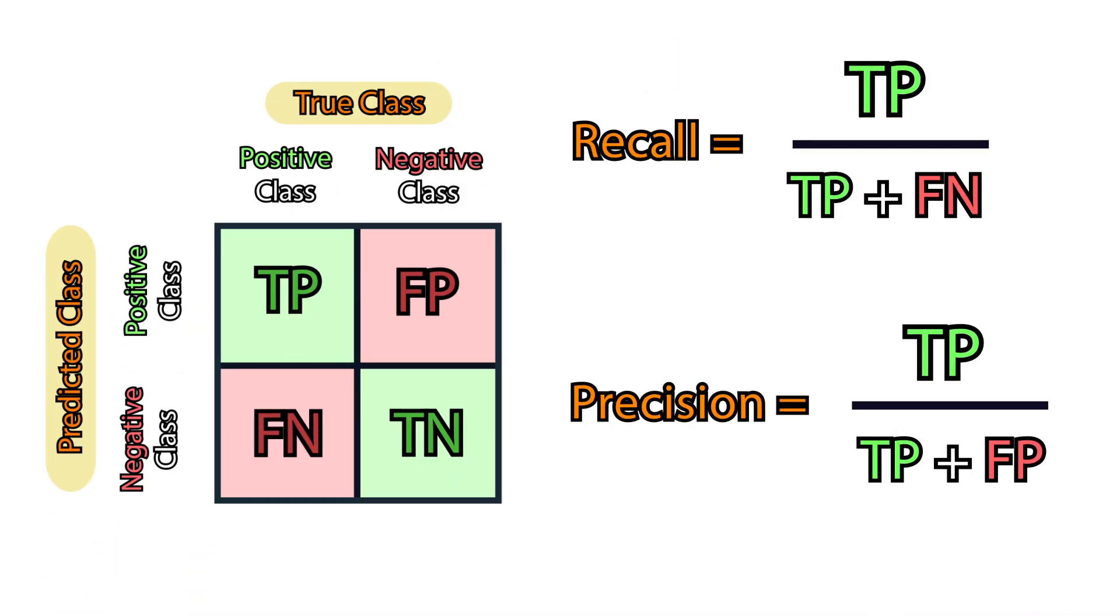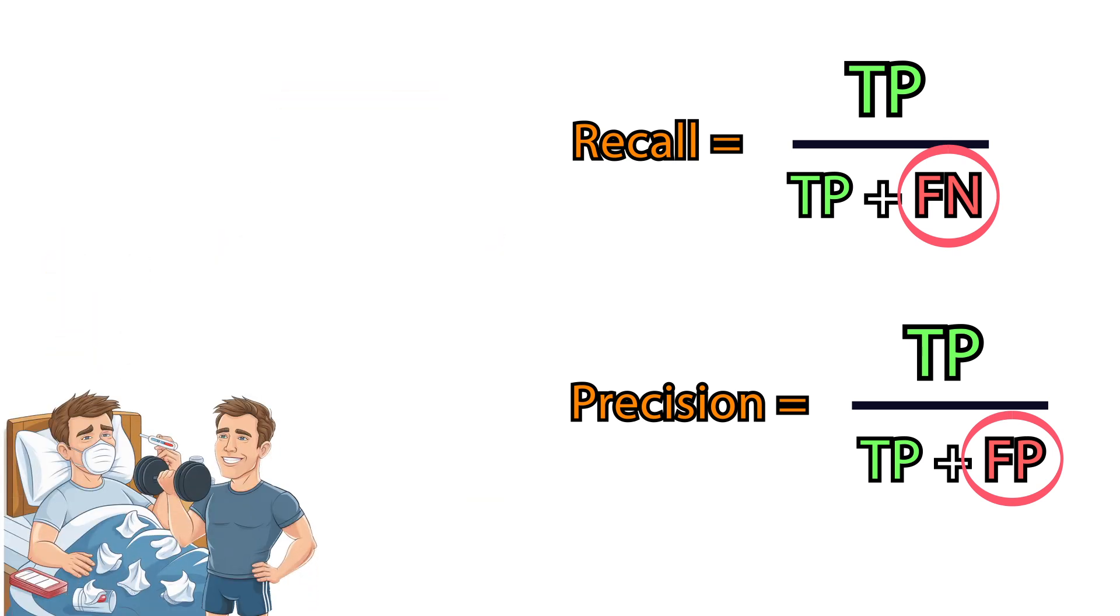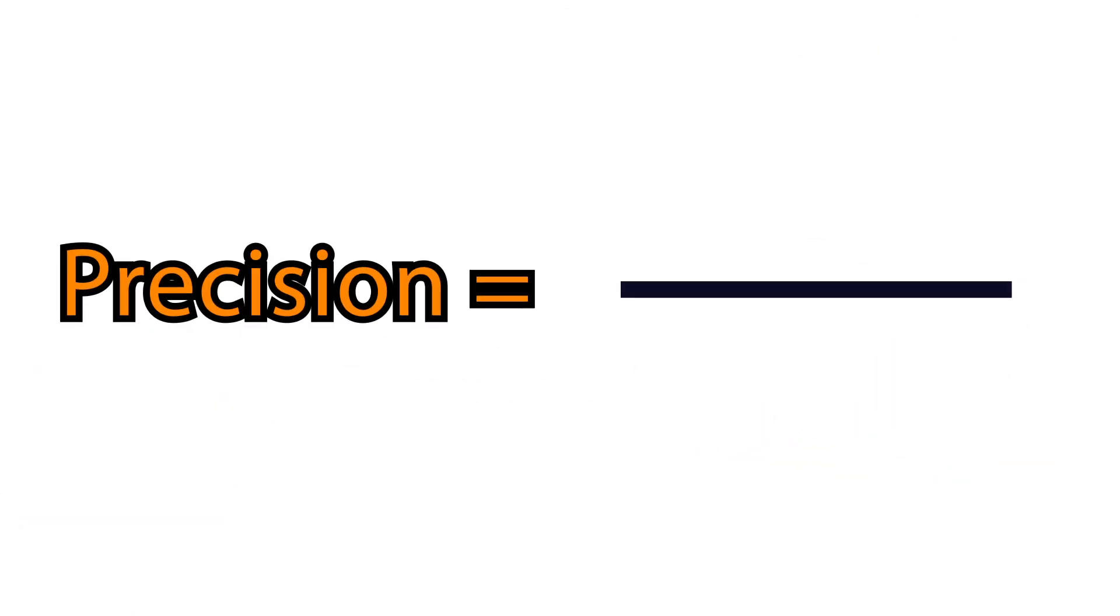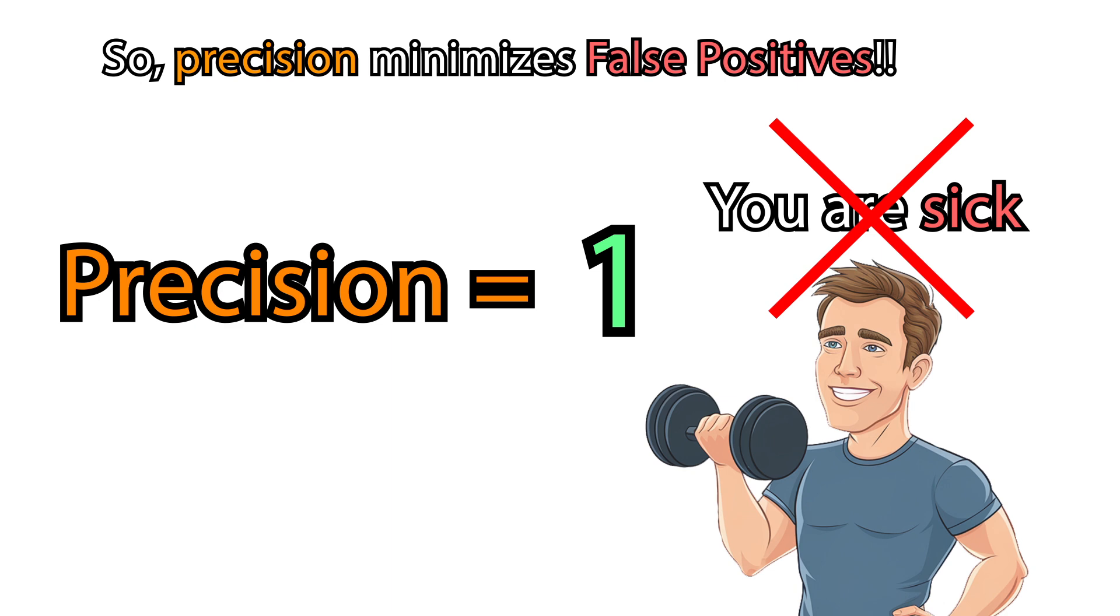Two more formulas appear here: recall and precision. Their difference is in the denominator. In our problem terms, precision has false positives in the denominator, meaning a high precision value will mean the model does not predict flu when the person is healthy.